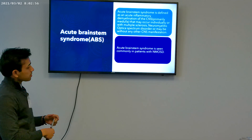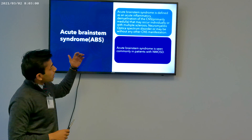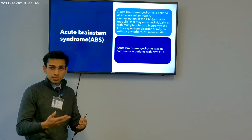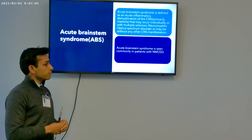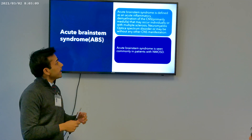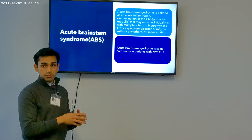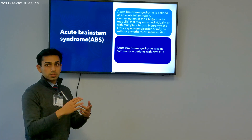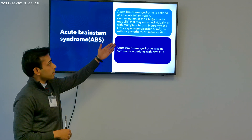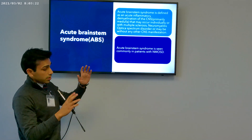First, let's talk about the definition of acute brain stem syndrome. Acute brain stem syndrome is defined as an inflammation or an autoimmune reaction against the brain stem, primarily involving the medulla. It could occur individually as its own disease, it could be related to multiple sclerosis, or it could be related to NMOSD — neuromyelitis optica spectrum disorder.